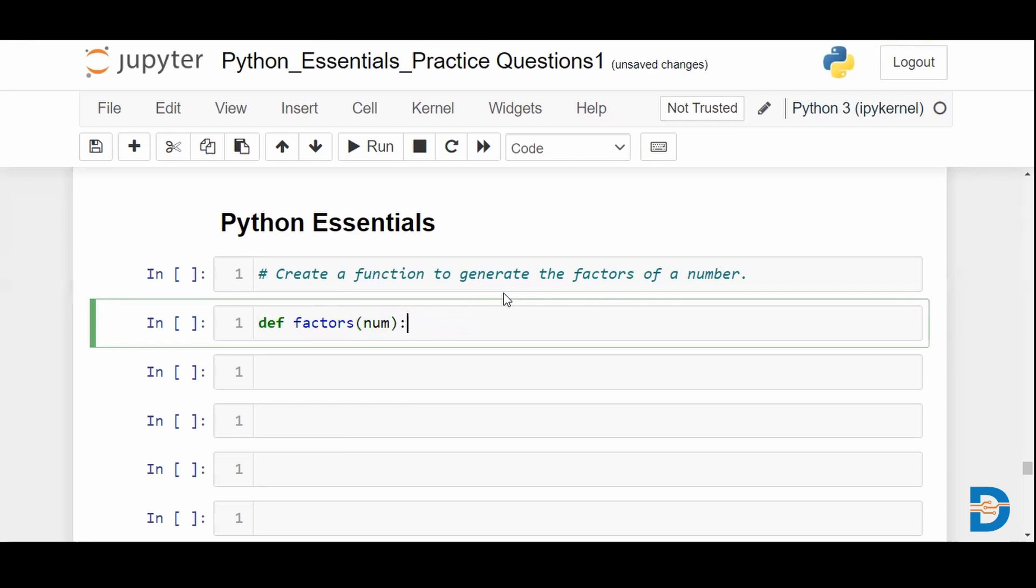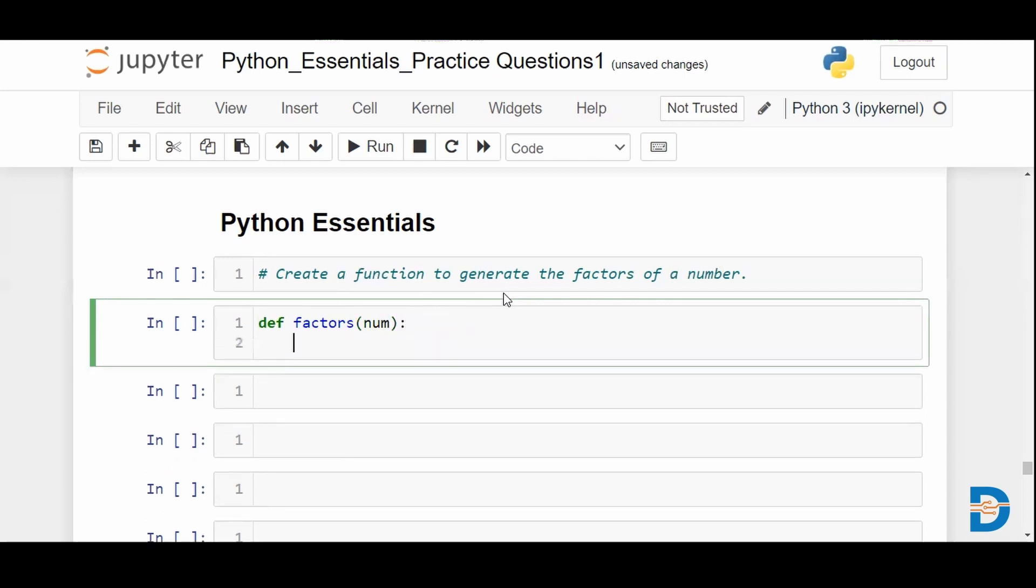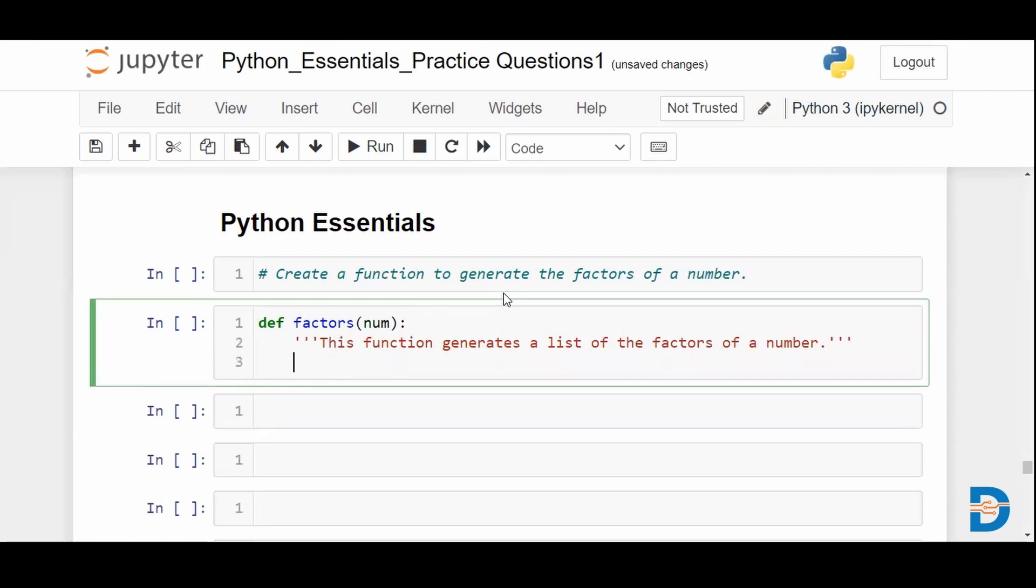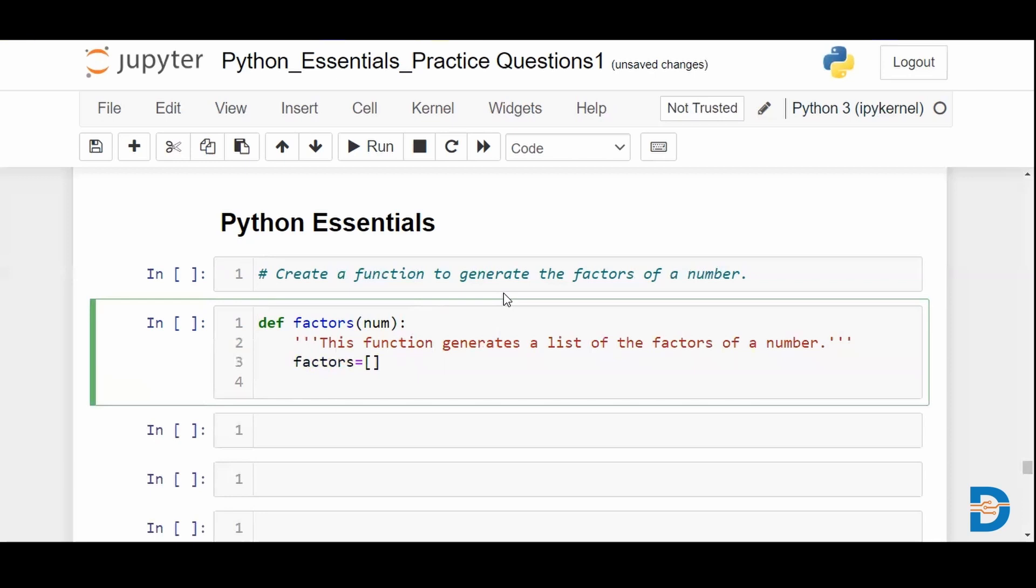It takes num as an argument. We'll call the function 'factors.' It generates a list of the factors. We can call the variable 'factors' and initialize that as an empty list.